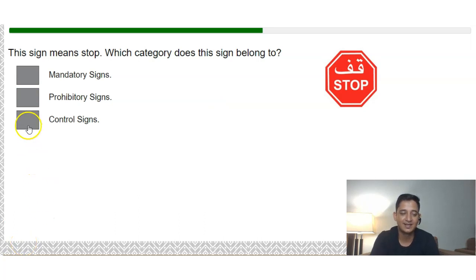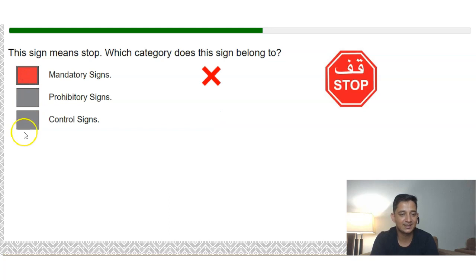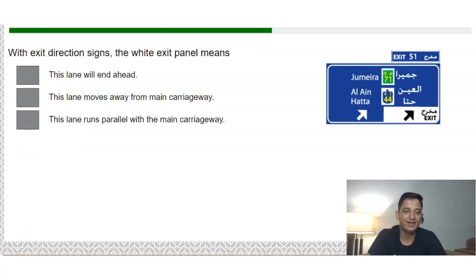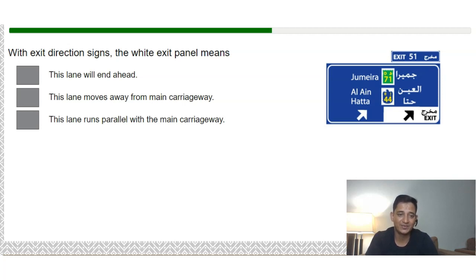Knowledge check: The correct answer for the sign that controls right of way is a control sign — not a prohibitory or mandatory sign. The sign that warns of a pedestrian crossing ahead is the first option shown. Regarding exit direction signs, the white exit panel means the lane moves away from the main carriageway — not that the lane ends ahead or runs parallel to the main carriageway.